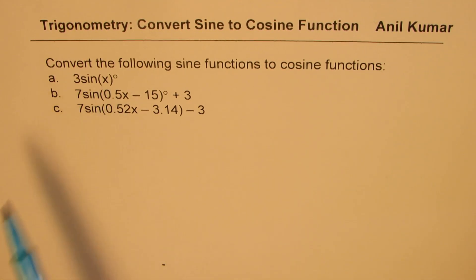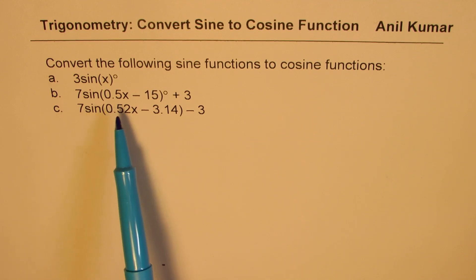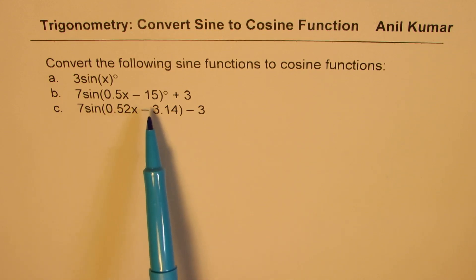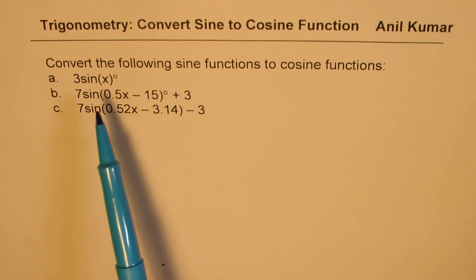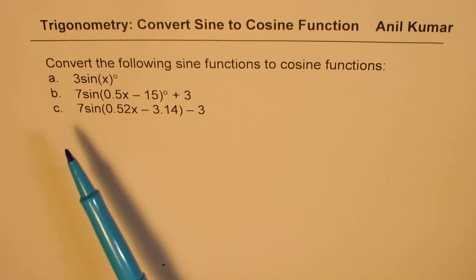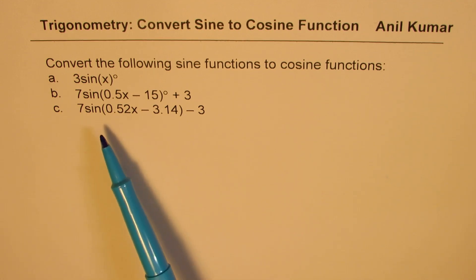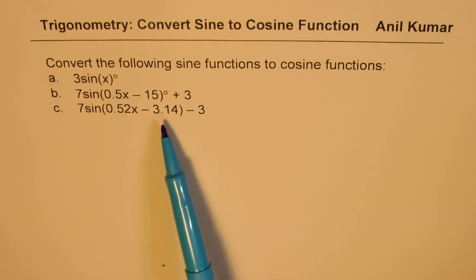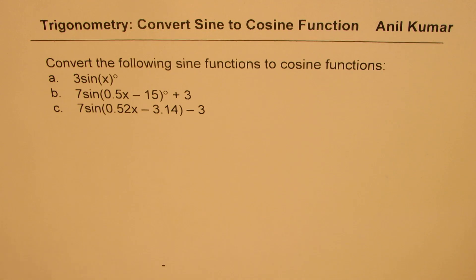The three functions are: 3 cos x; 7 sin(0.5x - 15) + 3; and 7 sin(0.52x - 3.14) - 3. The first two are in degrees and the third equation is in radians. I'd like you to pause the video, answer this question, and then look into my suggestions.